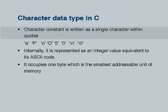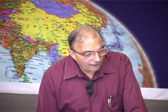First of all, the character constants — how are constants written in our program? The correct character constants are written as a single character within single quotes, like what you see here. I have small 'a' in a single quote. Please note this is different from writing a string. An individual character as a data value will have to be indicated like this.